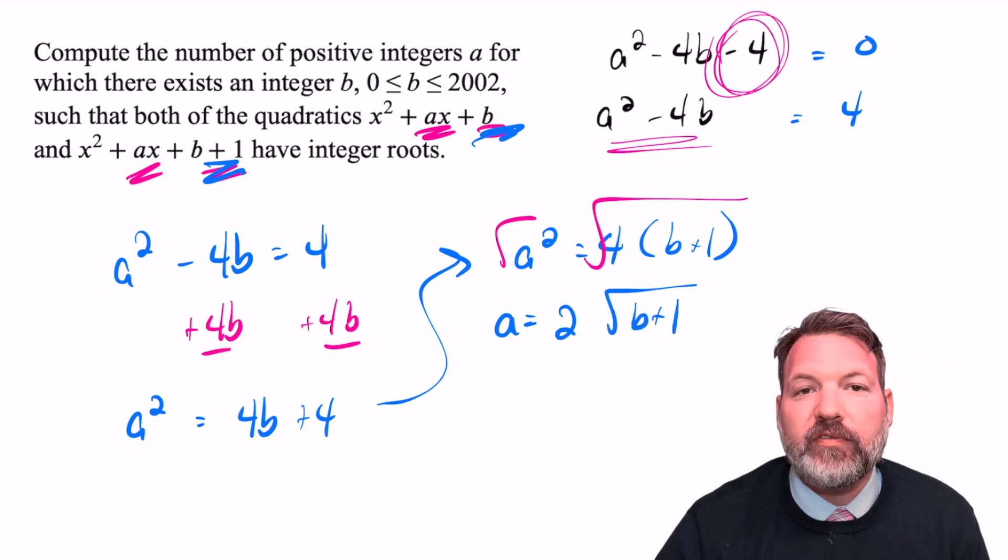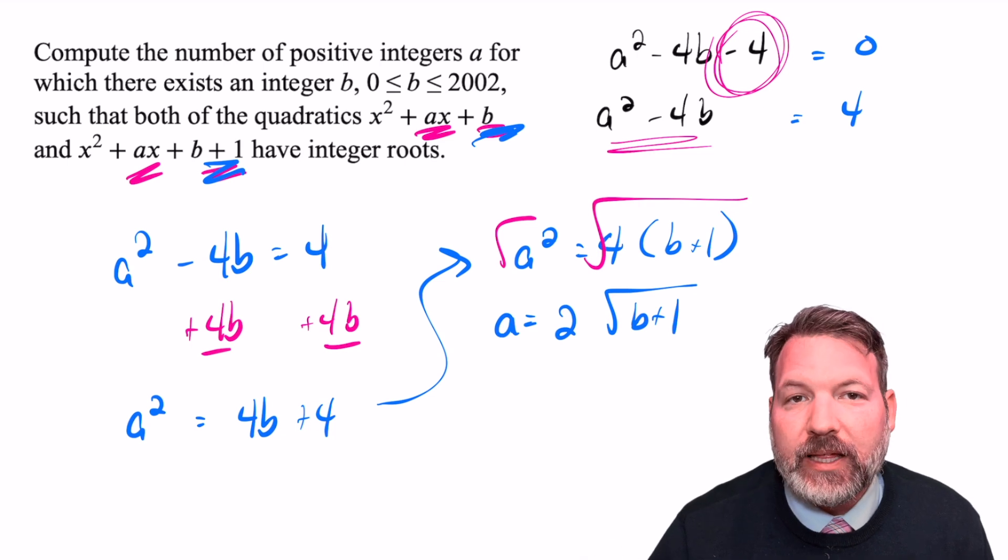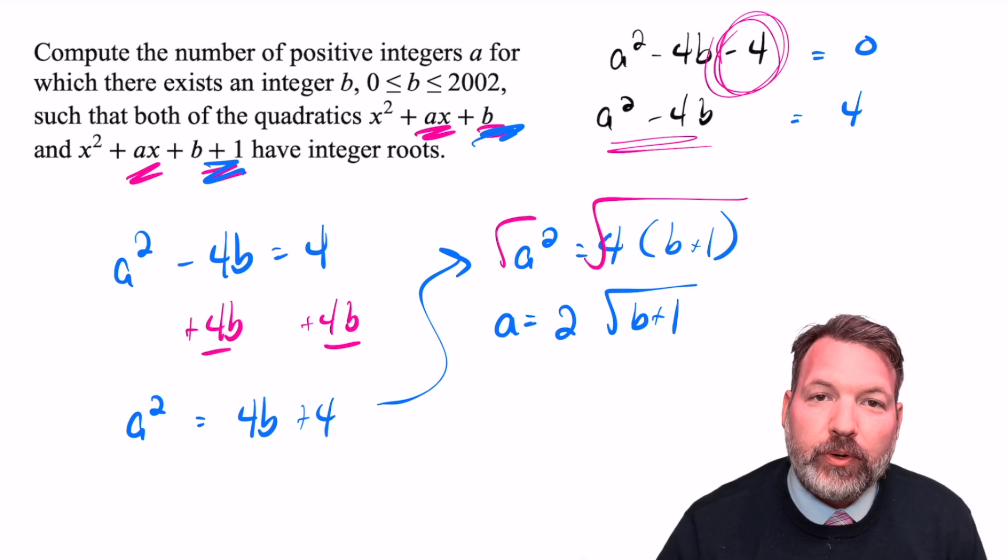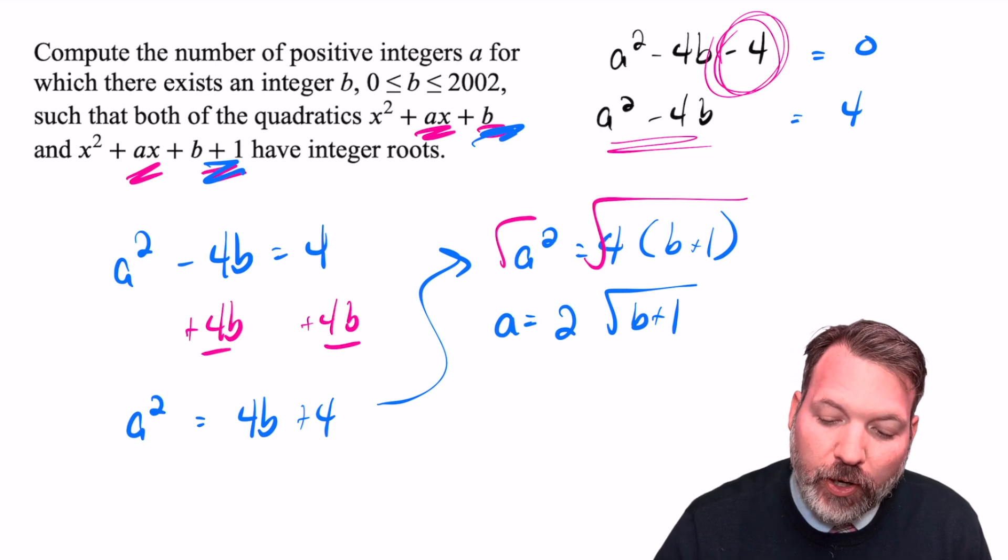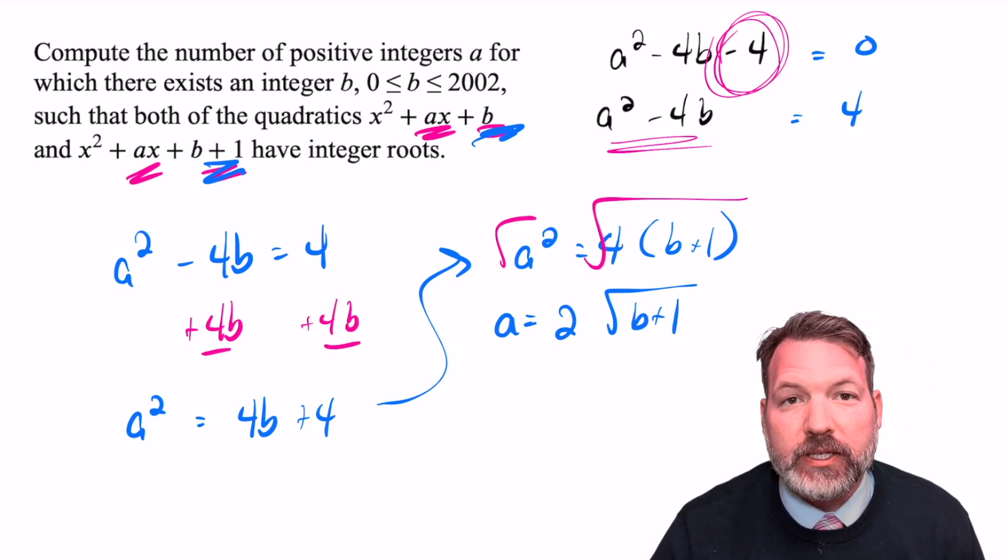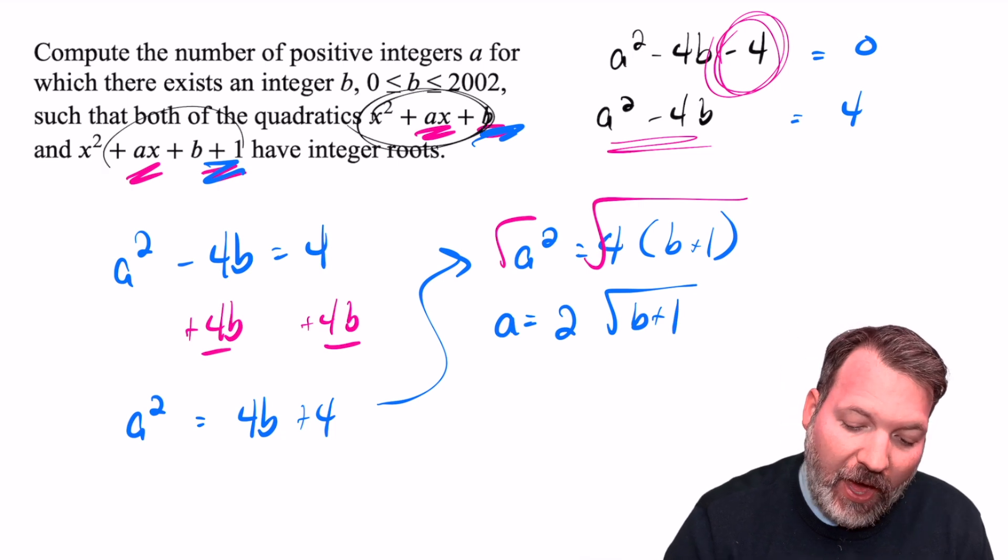Which is exactly what we said was happening in that table we created with all the possible A and B values.